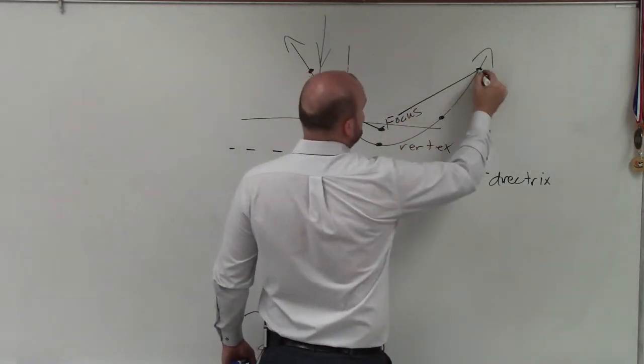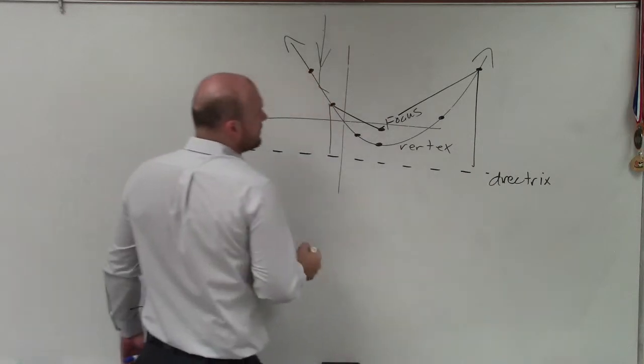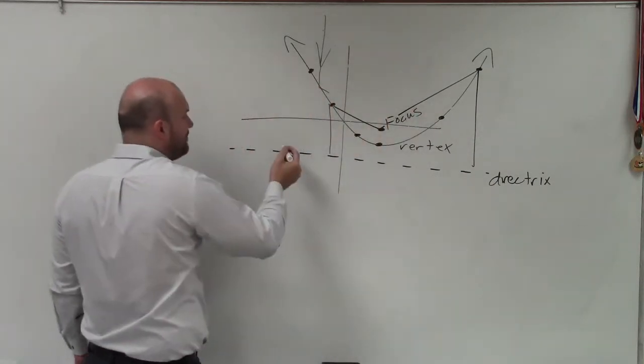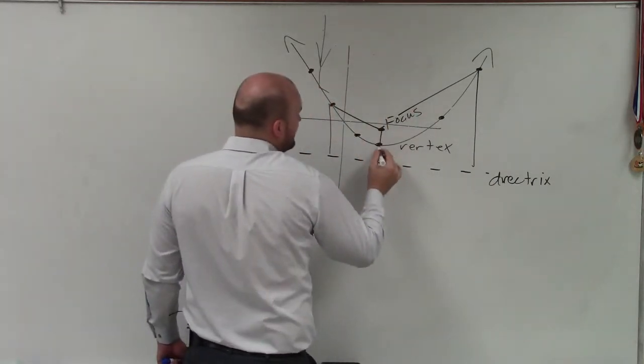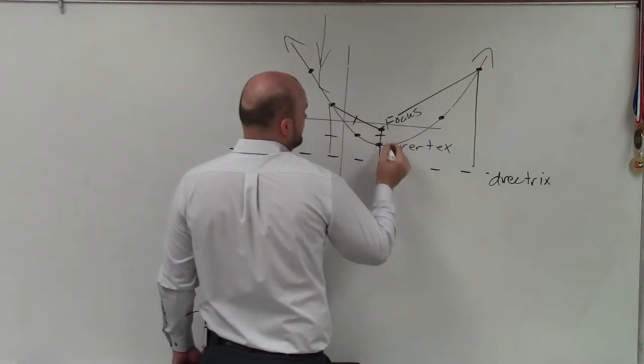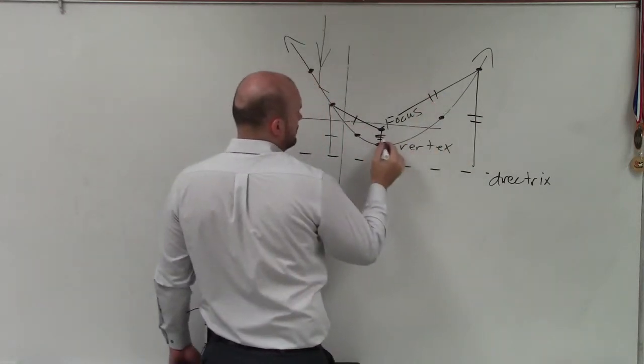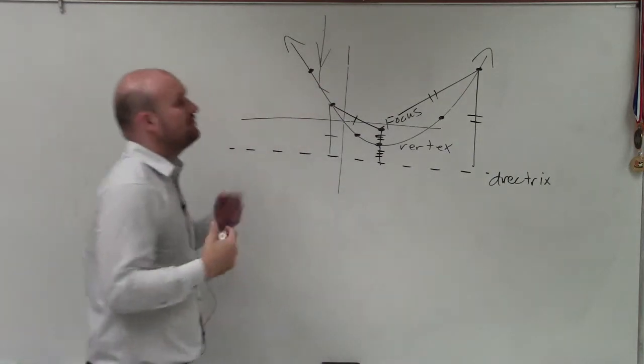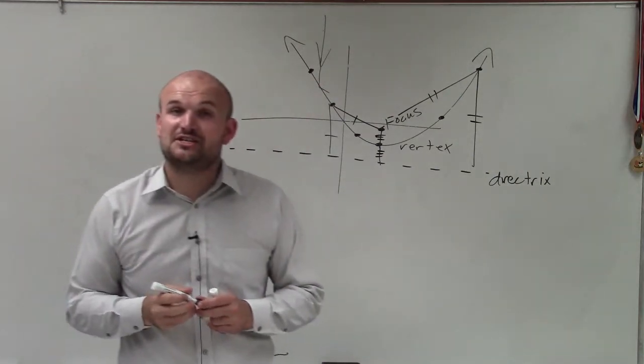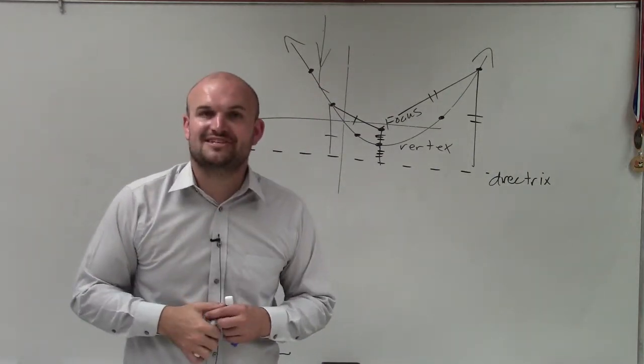And you can see it doesn't matter, ladies and gentlemen, where my point is on the parabola, but it's always going to be equal distance. OK? So that is just your basic definition of a parabola for conic sections. Thanks.